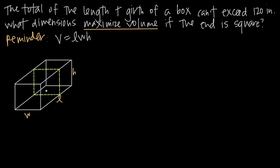We've got a picture of our box here. We know that the volume of any box is just the width times the length times the height. So we have the formula: V = L × W × H. Once we identify that we need this volume function, we have to get that function in terms of one variable only. Right now it's in terms of three variables — length, width, and height — so we need to reduce it.